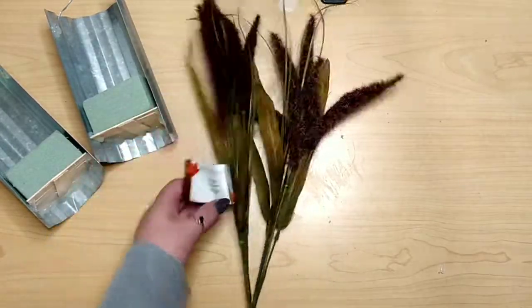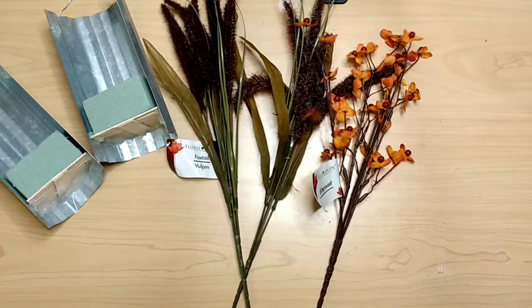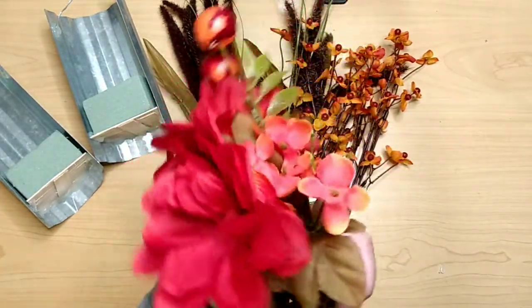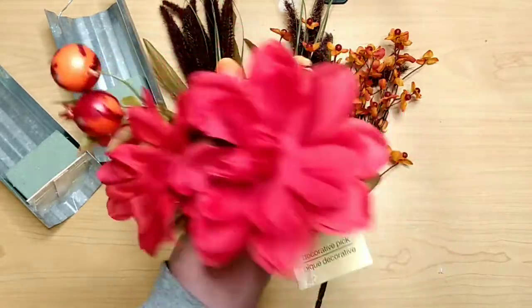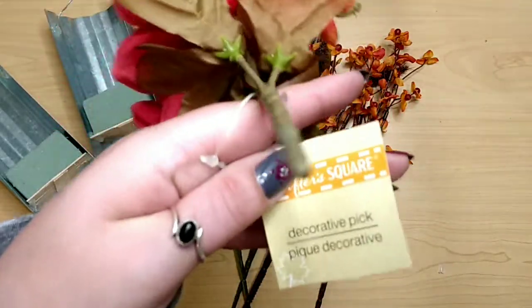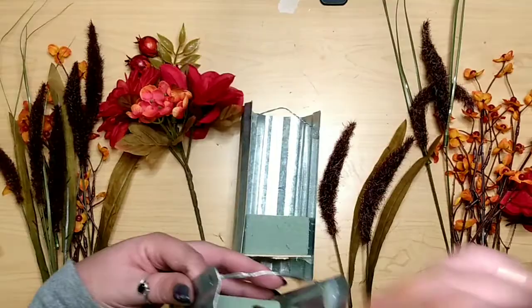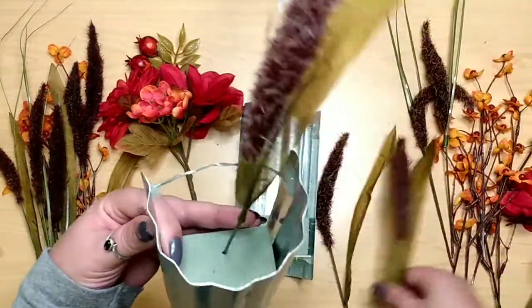We got foxtails, bittersweet, and these gorgeous decorative picks from the Dollar Tree. They got like three different flowers on them and some fruit. Oh, they're so pretty. We're going to cut the foxtail and the bittersweet off of their main stem. Leave the decorative picks intact.